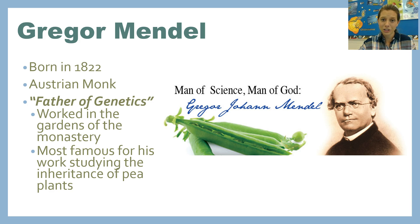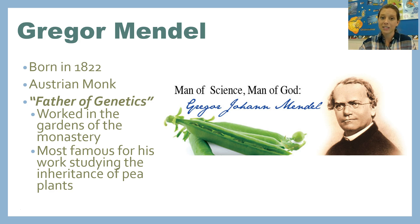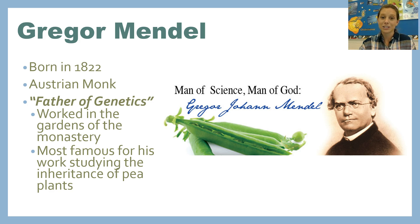We can't talk about genetics without first talking about Gregor Mendel. Gregor Mendel was born in 1822. He initially thought he wanted to become a physician, but as it turns out, he is terrified by the sight of blood. So instead of becoming a doctor, he followed his other passion, which was religion, and he became a monk.